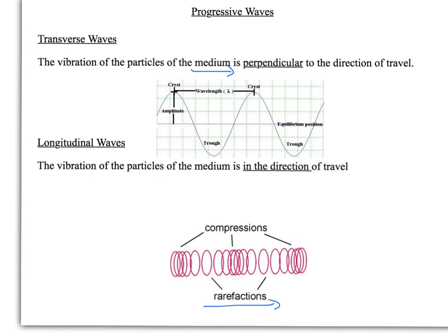A transverse wave is one where the vibration of the particles of the medium it's traveling in is perpendicular to the direction of travel. So if our direction of travel is going across the screen, you see the vibration of the particles is going up here and down here like this. So the direction of the vibration is going to be perpendicular to this direction here.